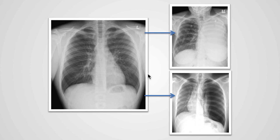Here we have an example of a normal chest x-ray. If we focus on the left hemithorax, this is what normal looks like. In this next example, we see that the left hemithorax is too white. The reason the left hemithorax is white is because the left lung is collapsed.